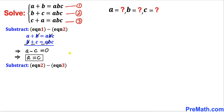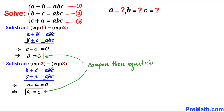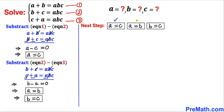Now we are going to subtract equation three from equation two. Subtracting, the c and negative c cancel, and abc minus abc gives us zero. So b minus a equals zero, meaning a equals b. Comparing our two results — a equals c and a equals b — we also get b equals c.